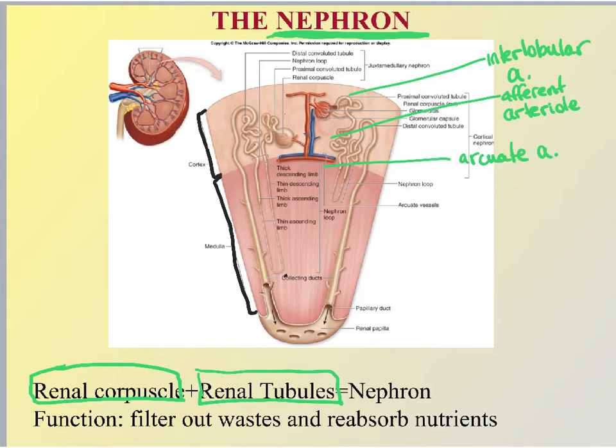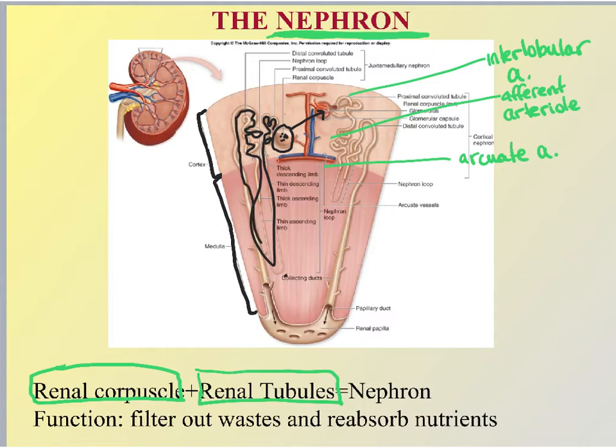The renal corpuscle is this structure right here — corpuscle means little body. What you see on the left side of the image is a beige structure, a very thin covering. What you see on the right, that red ball of yarn, is actually located inside of that beige structure — that's called the renal corpuscle. And then this system of tubes all around here, those are what we refer to as the renal tubules.